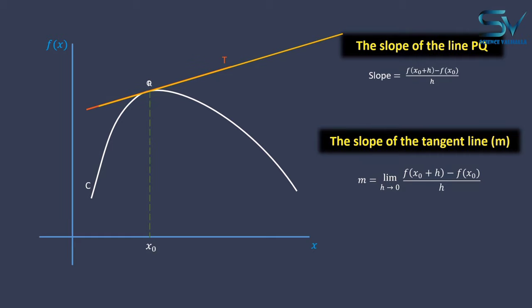Using the concept of limit, we define the slope of the tangent line in this manner. One more thing, now we can write the equation of the tangent line, using the slope of the tangent line.